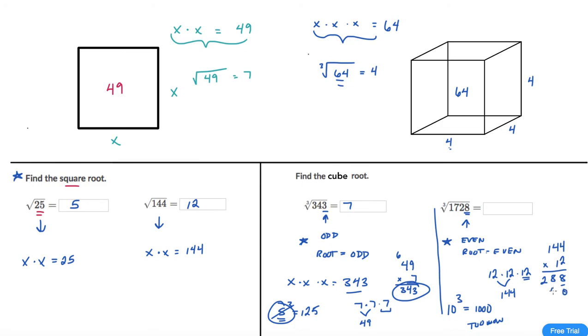Carry 0. 1 times 4 is 4. 1 times 4 is 4. And 1 times 1 is 1. Now when I add these all up I have 8. Carry this. And I get 1728 which is exactly what I'm looking for. So the answer to this case, the cube root of 1728 is 12.